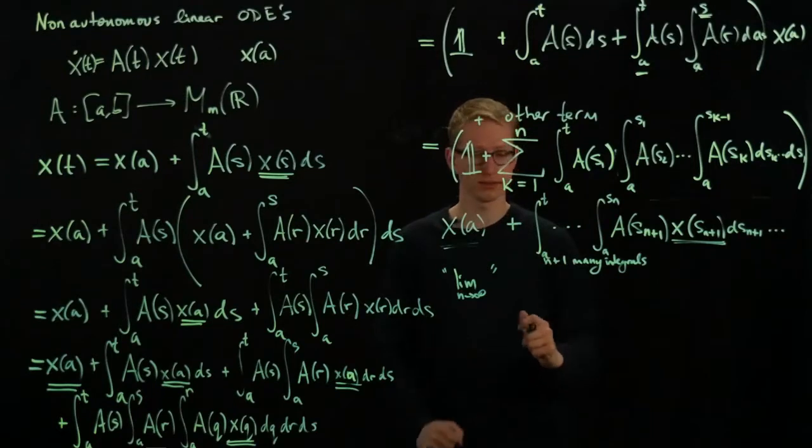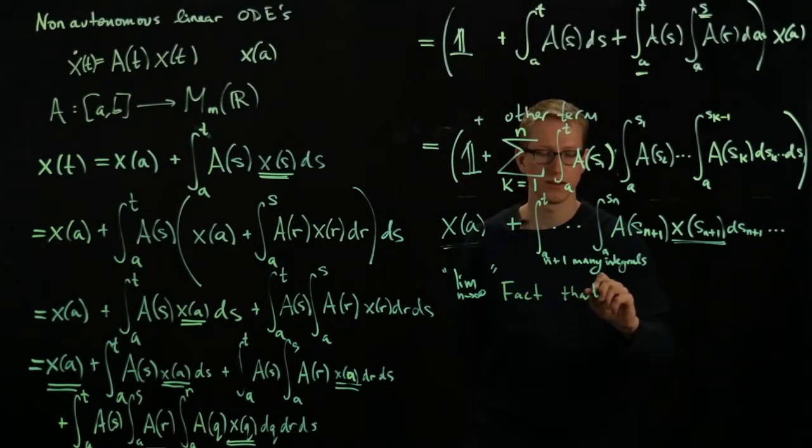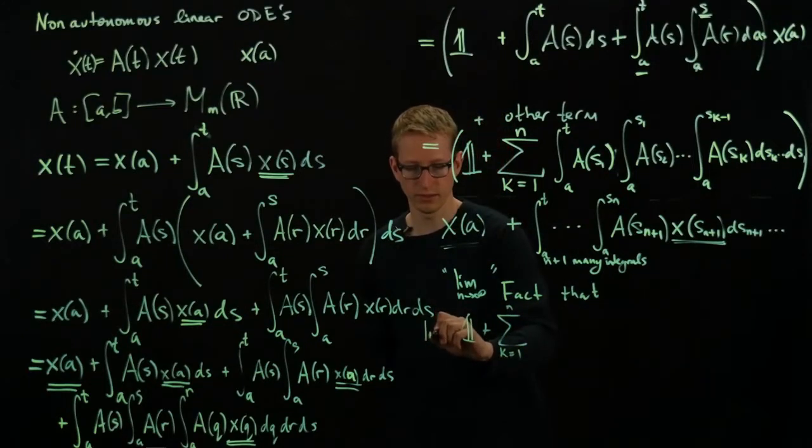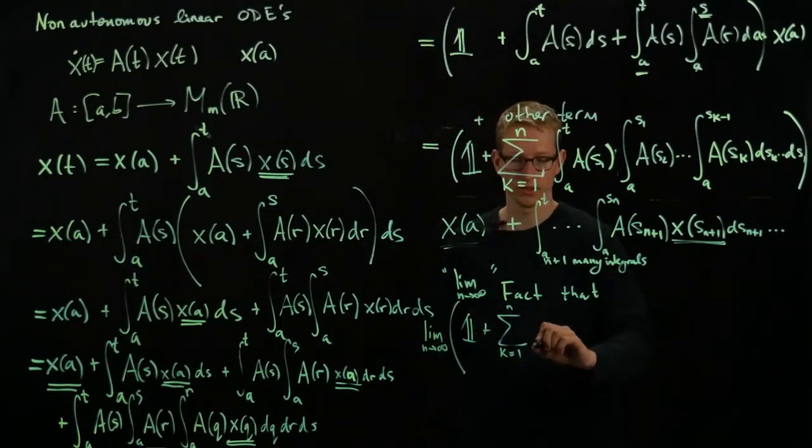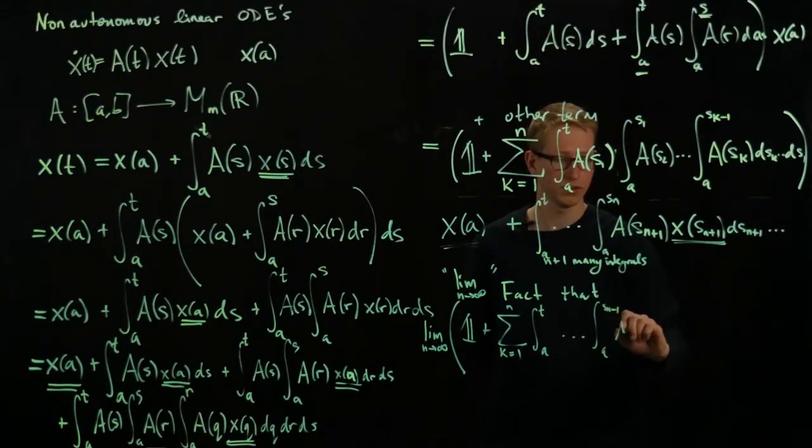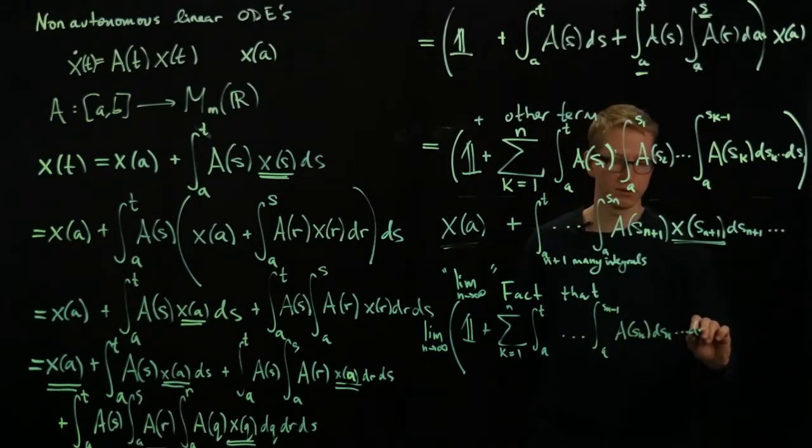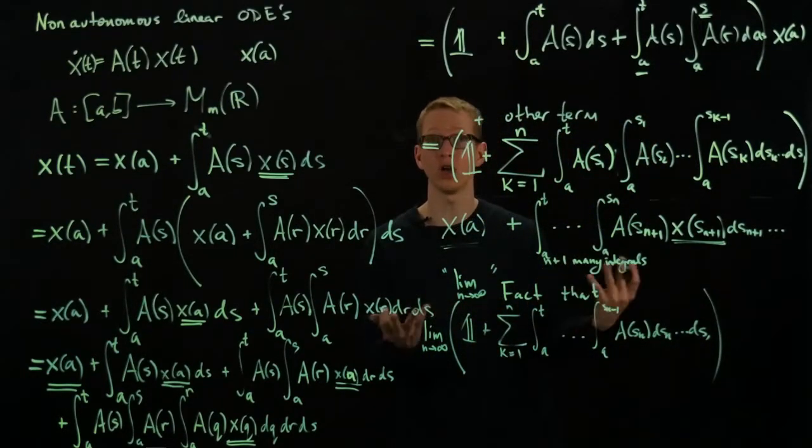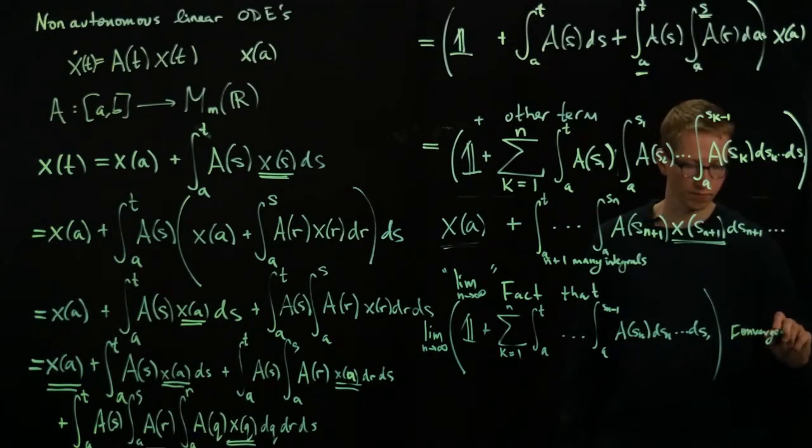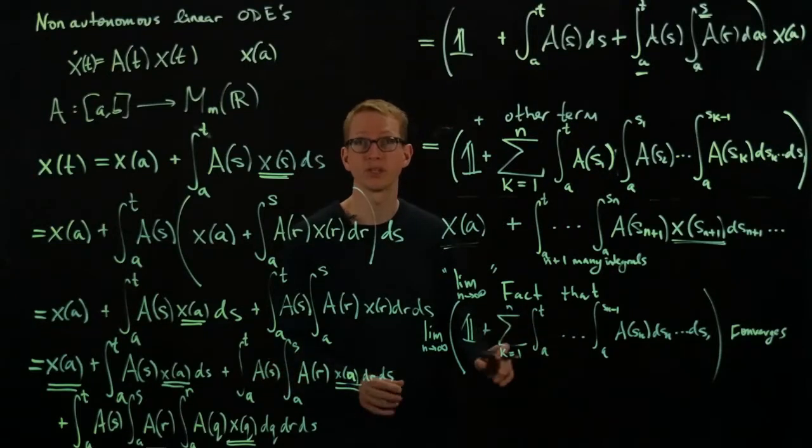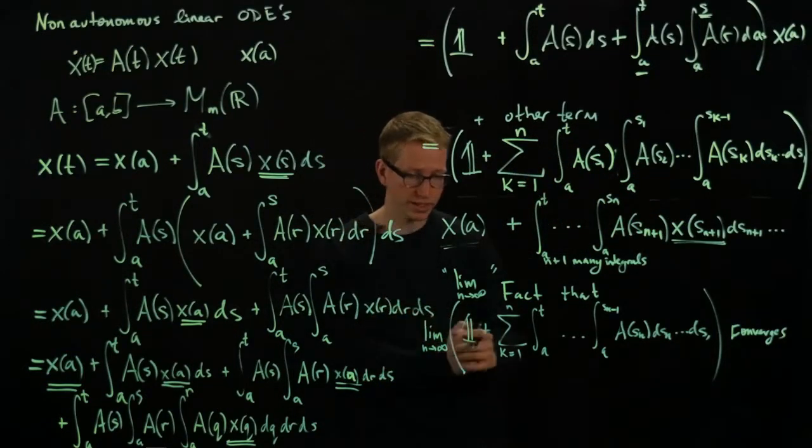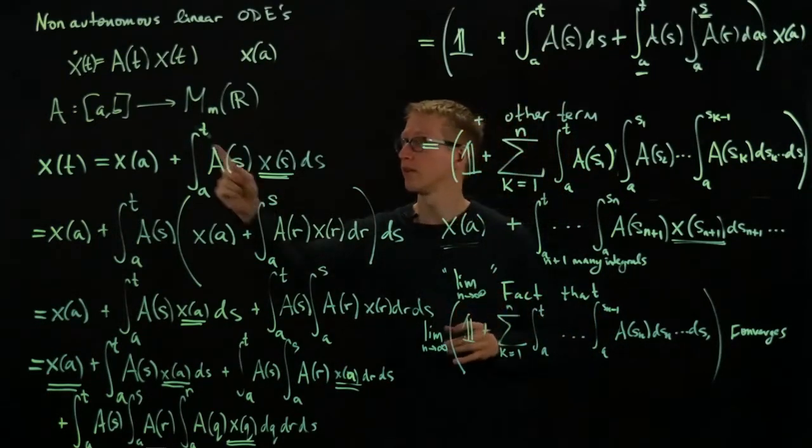And so it turns out that this works. So it's a fact that this term, identity plus this large sum, from k equals 1, let's take the limit, as n goes to infinity, of this expression. And I won't write everything. I mean this term exactly here. a(s_{k-1}), a(s_k), ds_k, down to ds_1. If I take 1 and then sum all of this over all n, this converges. Which is surprising. I mean, this is a very complicated sum of many, many integrals. And eventually we're integrating, you can in some sense think, infinitely many times. But nevertheless, this sum converges for all continuous functions here.